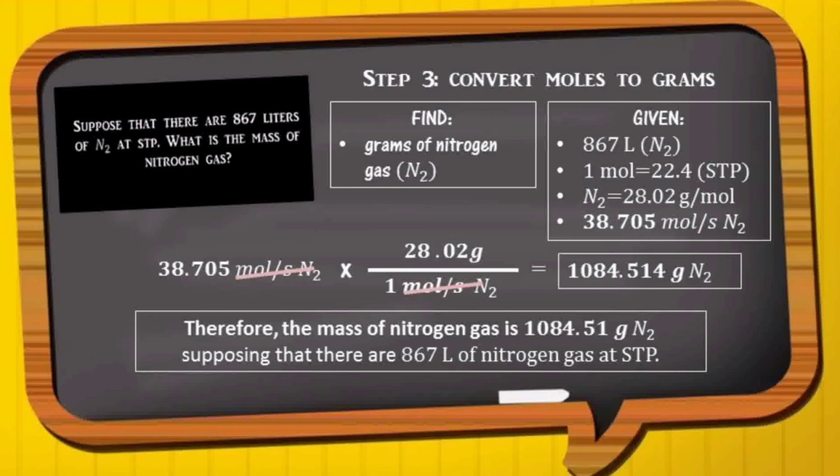Therefore, the mass of nitrogen gas is 1084.51 grams, supposing that there are 867 liters of nitrogen gas at STP.